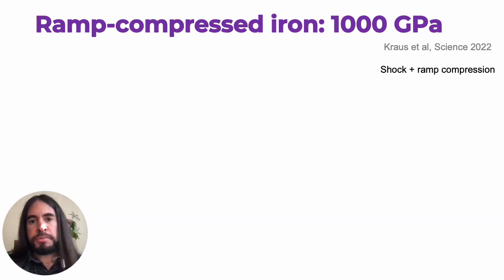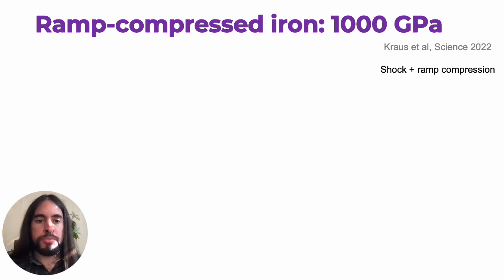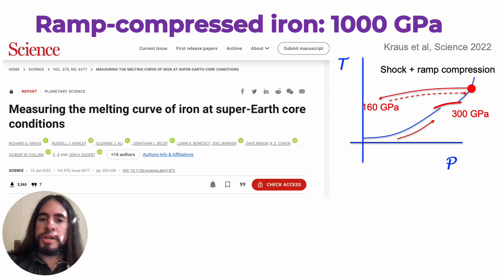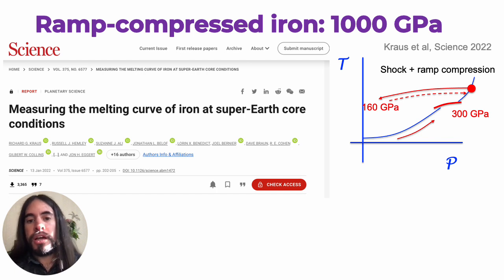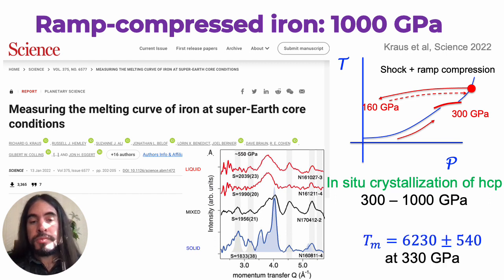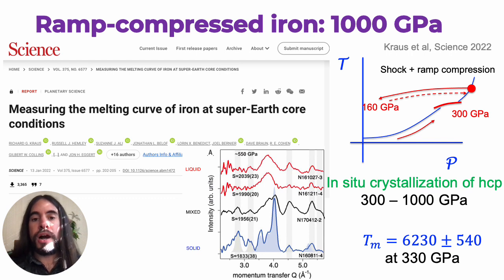There is a recent experiment published last year that was able to constrain the melting curve of iron up to 1000 gigapascals in a shock ramp compression experiment. In this study, Krauss et al. shocked solid iron to make it liquid, and then the decompressed liquid iron was ramp compressed until it hit the melting curve. They observed in-situ crystallization of HCP iron in the range of 300 to 1000 gigapascals, and the melting temperature of iron was constrained at 330 GPa to be 6200 kelvin.